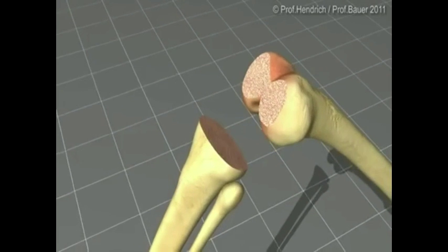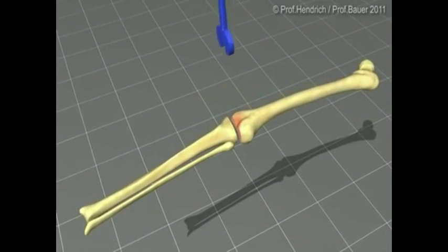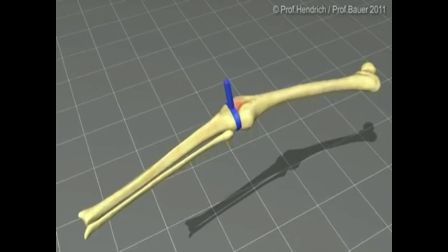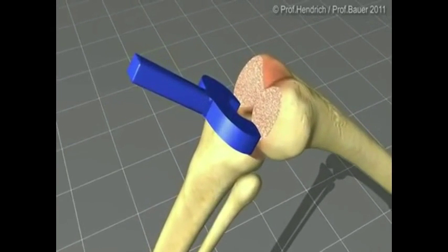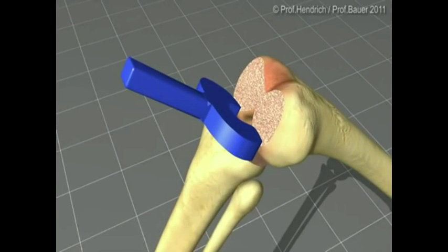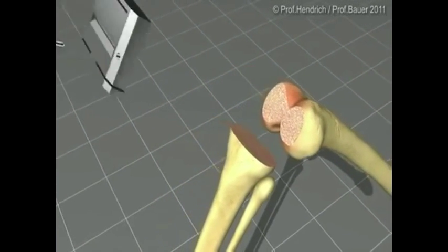Now, the knee is taken into full extension. A spacer block is positioned and the knee alignment and the extension and the ligament tension is checked. Also in 90 degree flexion, this spacer block gives me the later position of the femoral component.